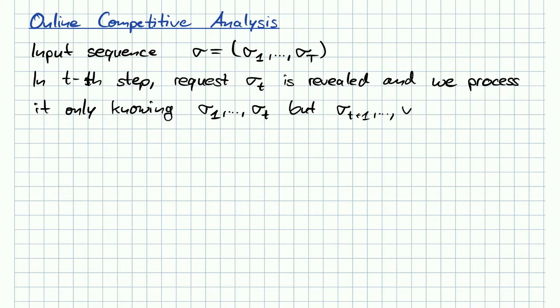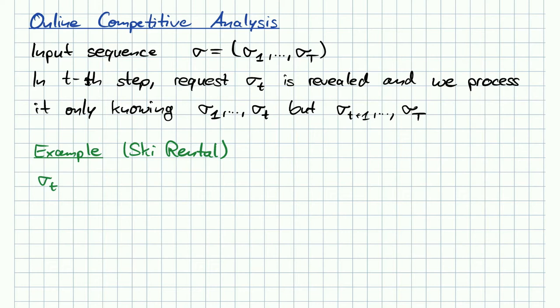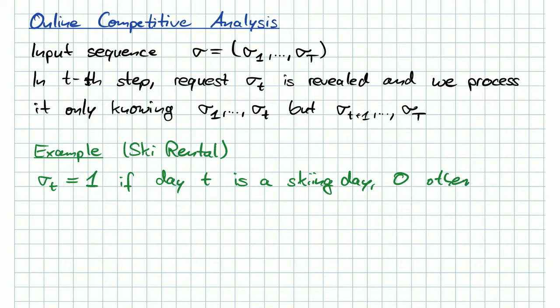For example, to capture ski rental, we might set sigma_T to 1 if day T is a skiing day, and 0 otherwise. We call an algorithm competitive if the following definition holds.